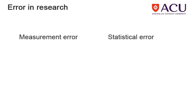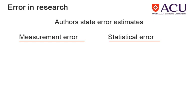In research, there are two distinct families of error: measurement error and statistical error. Since every measurement system has error, the authors should state or determine the measurement error associated with any measurement device. Measurement error is usually quantified using the plus or minus symbol, followed by a value and its units, such as plus or minus 0.7 volts.